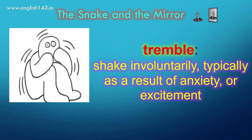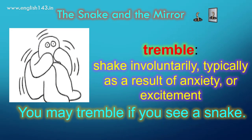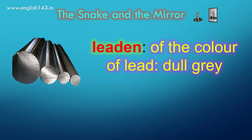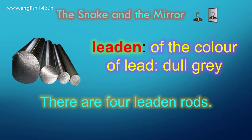Tremble means to shake involuntarily, typically as a result of anxiety or excitement. You may tremble if you see a snake all of a sudden. Leaden is a colour — the colour of lead. There are four leaden rods; the colour of the rods is leaden.